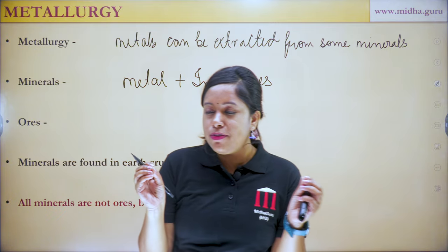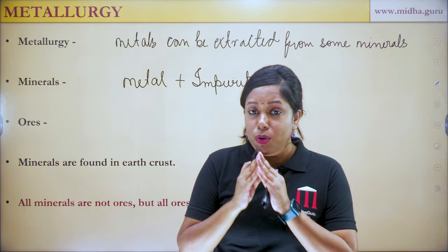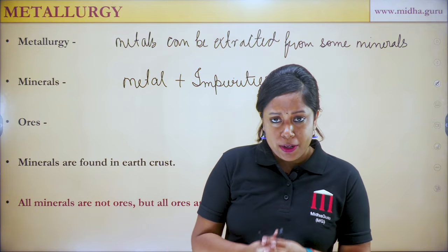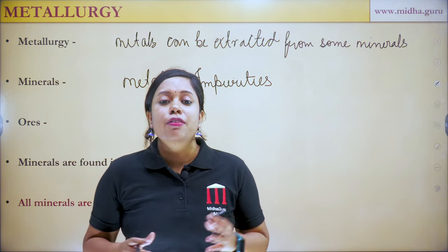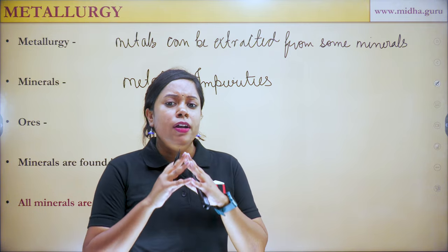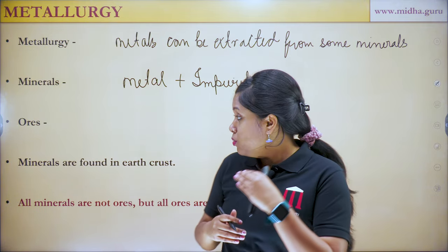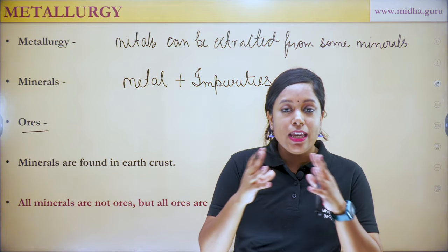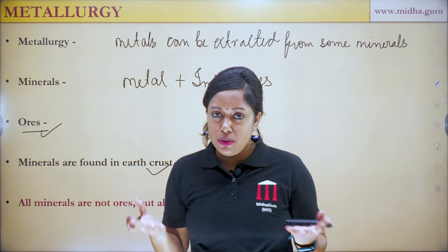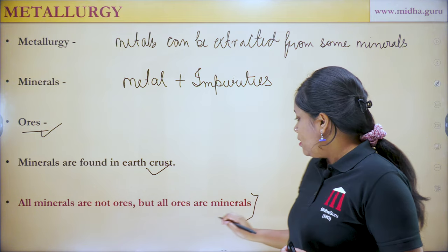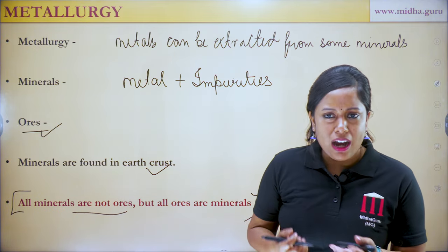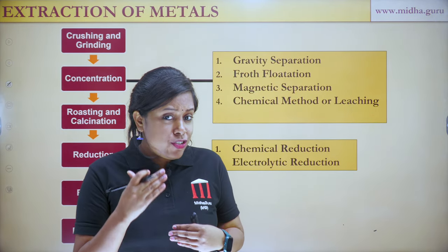Minerals are substances which contain metals plus impurities — those impurities can be salts, rocks, sand, limestone, and so on. Ores are minerals from which metals can be extracted easily and profitably. It is not possible to extract metals from all minerals because the extraction process may be very difficult or economically not preferable. An important point to remember: all minerals are not ores, but all ores are minerals.